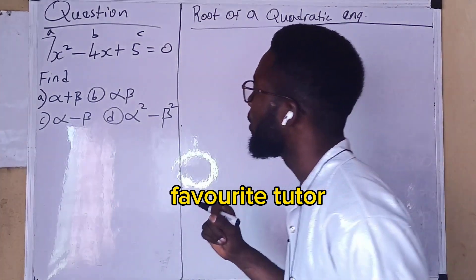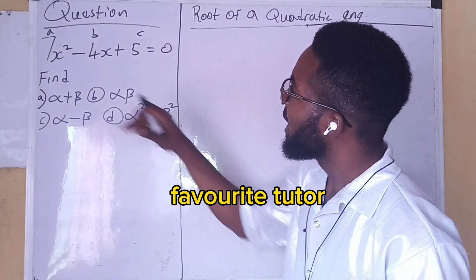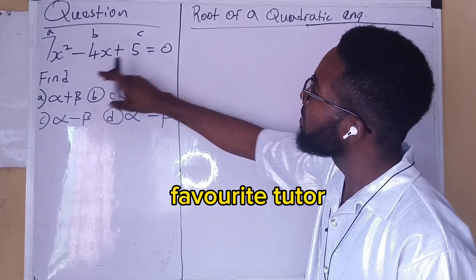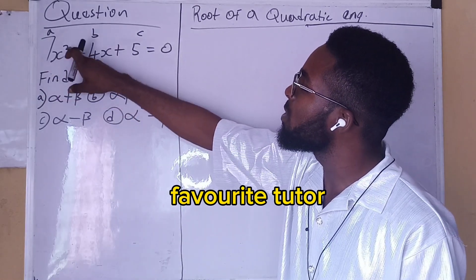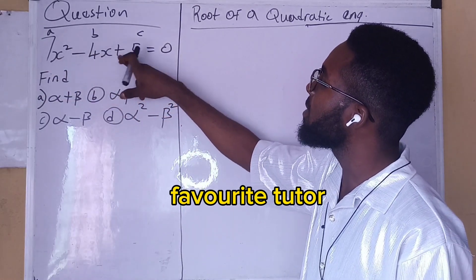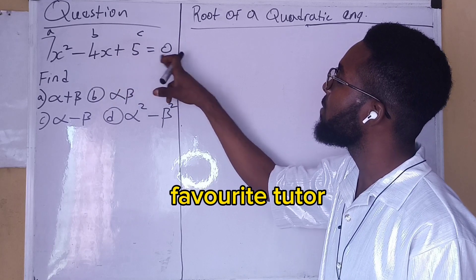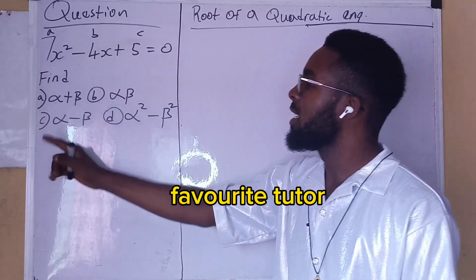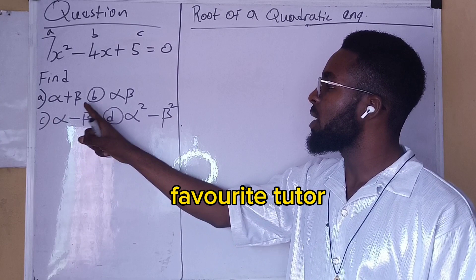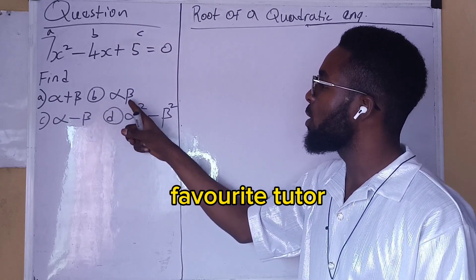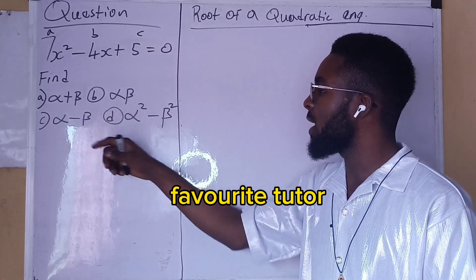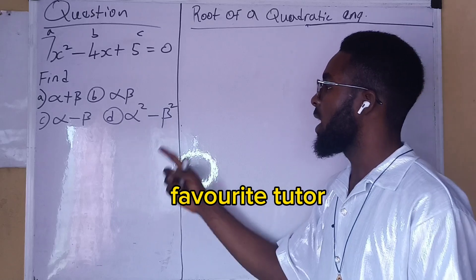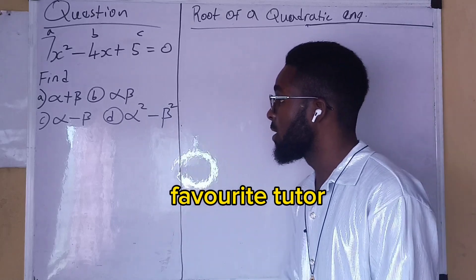Today we have a question on the board. Given the quadratic equation 7x squared minus 4x plus 5 equals 0, find the sum of alpha and beta, the product of alpha and beta, the difference of alpha and beta, and the difference of 2 squared alpha and beta.